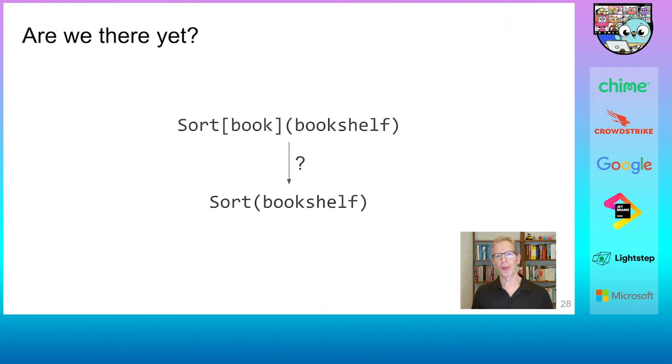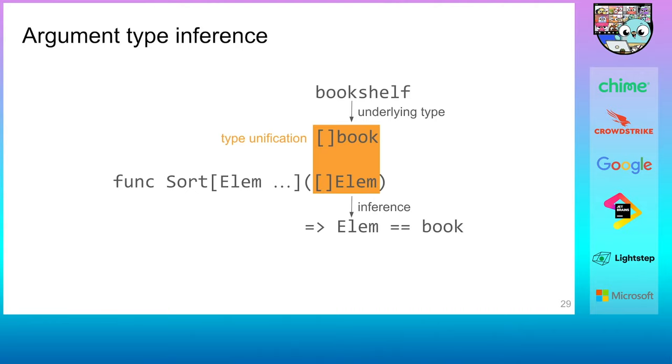So with all this, have we reached our goal of a truly simple to use sort function? Not quite, because we still have to provide an explicit additional argument, the type argument book. Yet we know that the bookshelf is full of books, so it would be nice if we didn't have to specify that extra argument. This would remove clutter and repetition from the code.